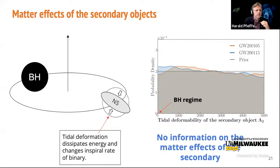A question asks at what frequencies the gravitational wave signal stops when the lighter object is swallowed. This happens typically at the orbital frequency of the innermost stable circular orbit. Given the masses of the black holes in our systems, this will be approximately at around 500 Hz, though the exact value depends on the specific system parameters.